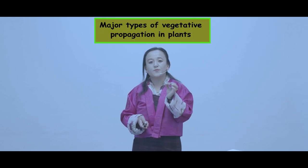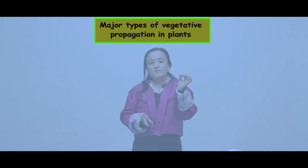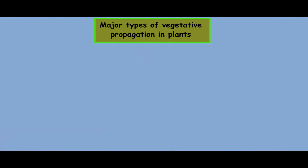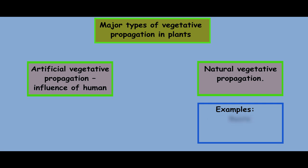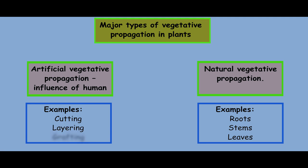Vegetative propagation can be either natural or artificial. Under natural vegetative propagation, plants reproduce through roots, stems, or leaves. Under artificial vegetative propagation, which is influenced by humans, plants reproduce through cutting, layering, or grafting.